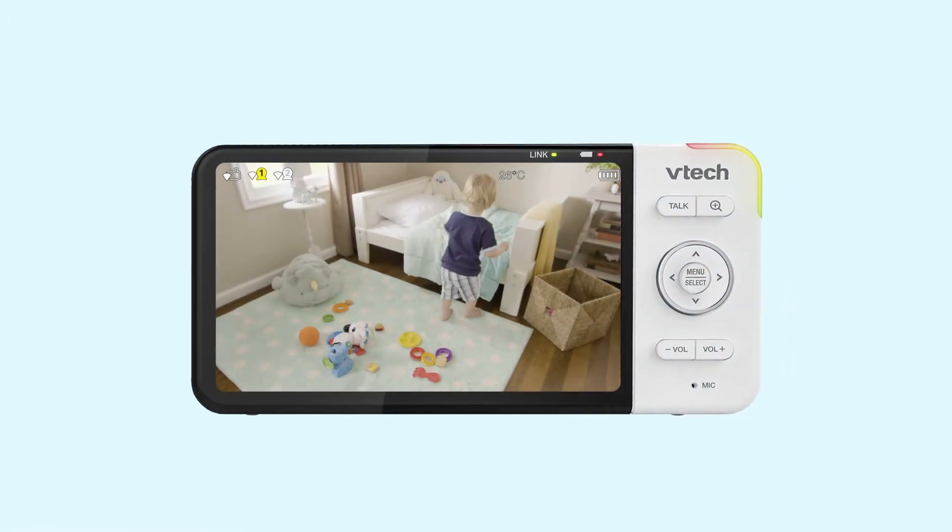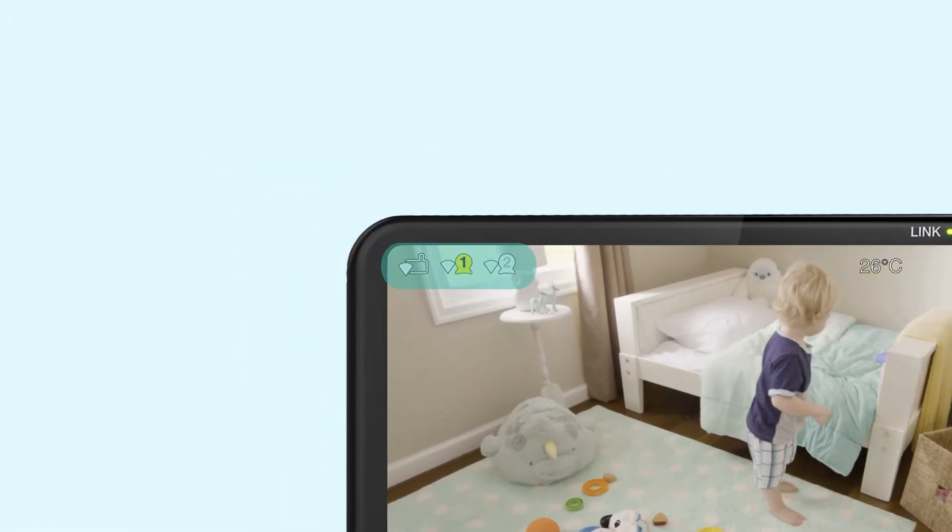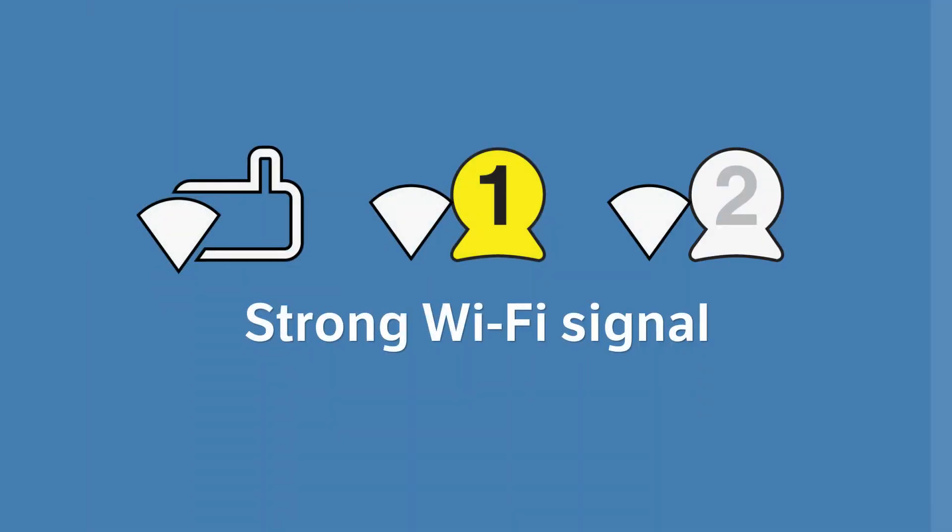Make sure your viewer is connected to your Wi-Fi network and find the Wi-Fi icon on the viewer. When the Wi-Fi signal strength icon is full, it indicates the signal is strong and the video will stream smoothly.